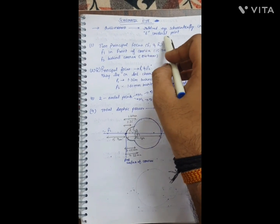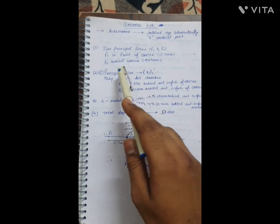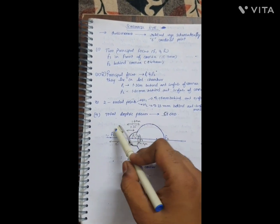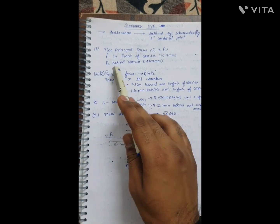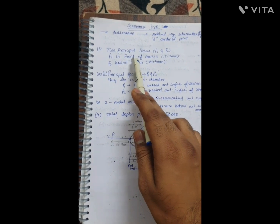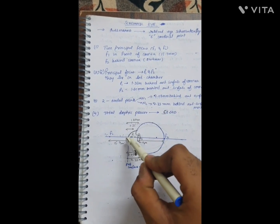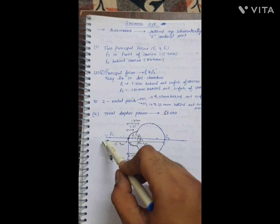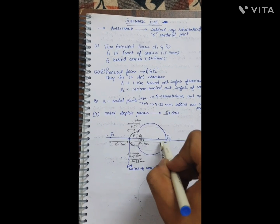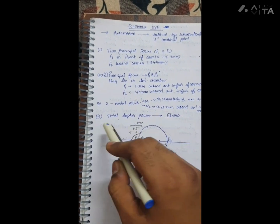These six cardinal points include two principal focus points, F1 and F2. F1 is in front of the cornea at 15.7 millimeters, and F2 is 24.4 millimeters behind the anterior surface of cornea. These are two cardinal points.